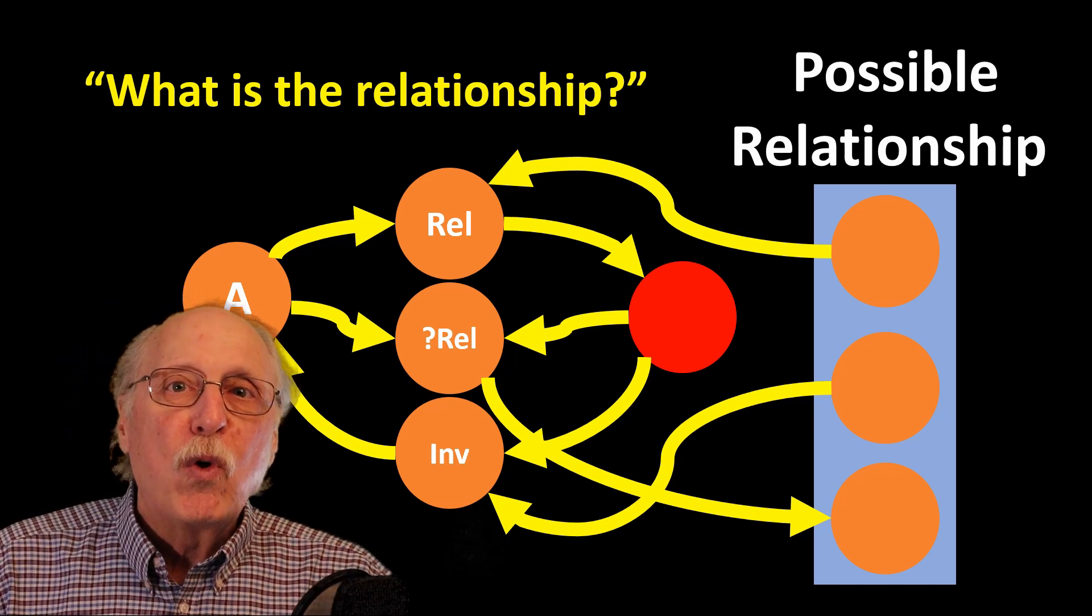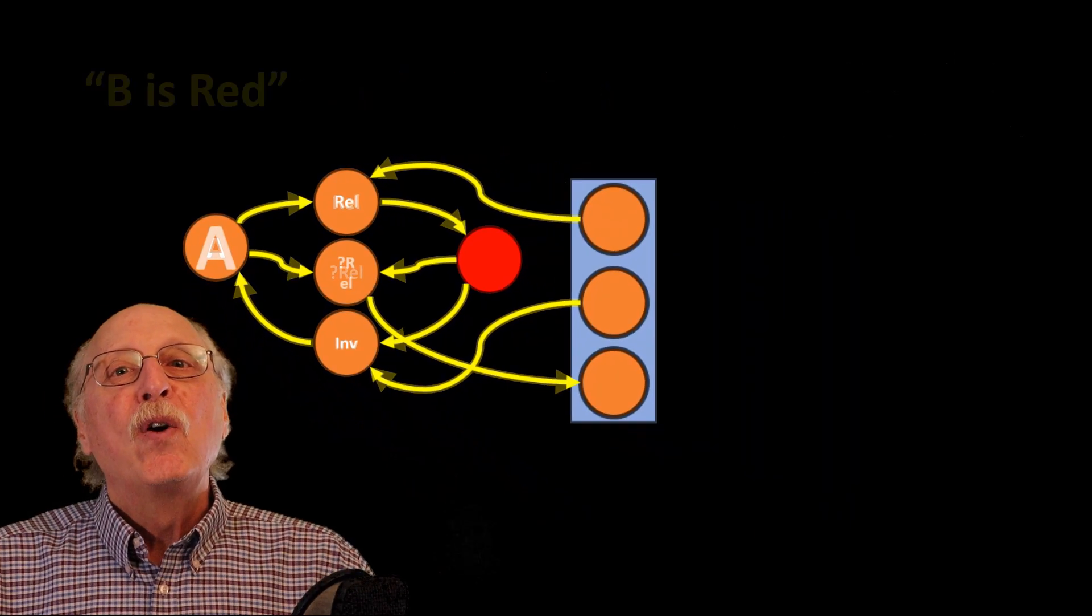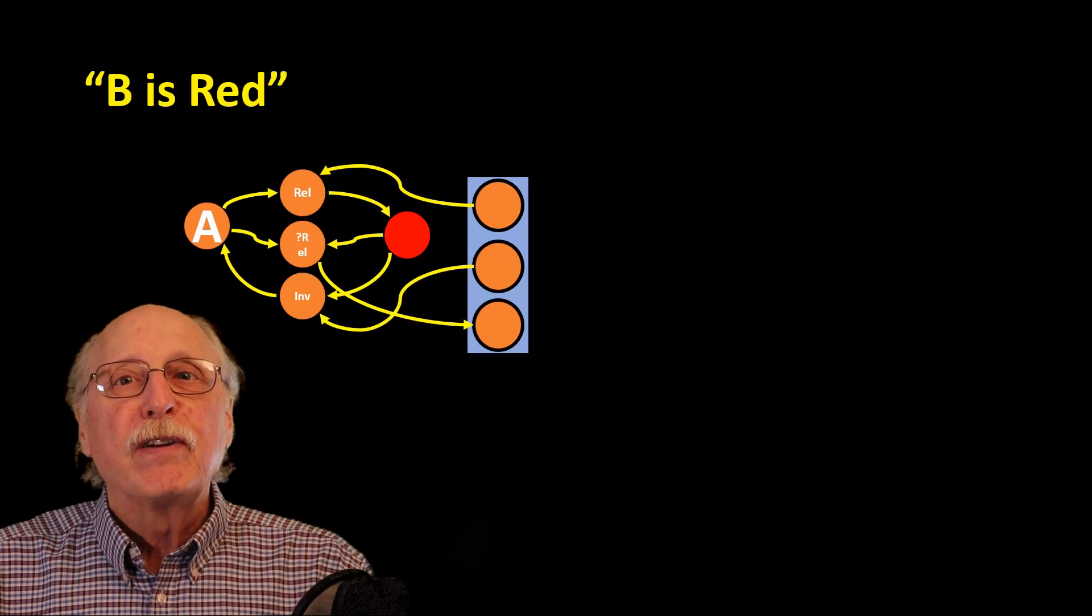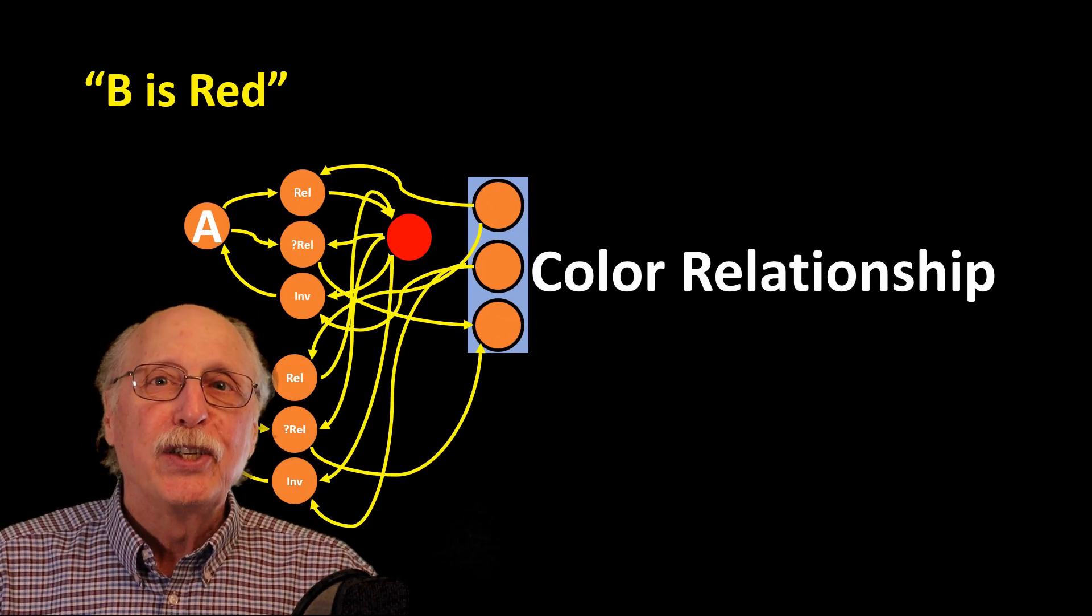So if we also wanted to represent the information that B is red, we'd need to utilize another set of neurons and synapses to represent that color relationship.